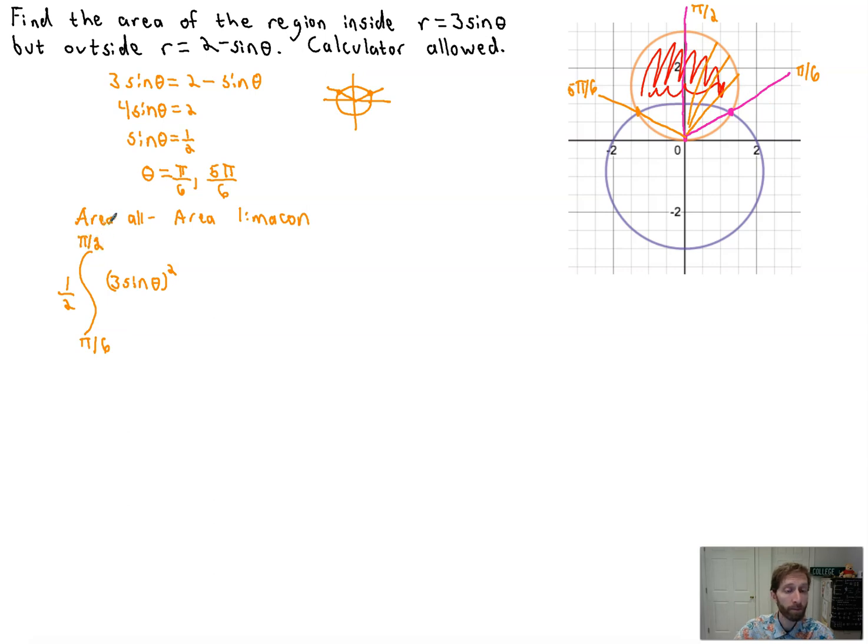And we're going to subtract from that. You could probably put it, not probably, you could put it all as one integral, but I'm going to do it as two. Pi over 6 is a pi over 2, one half there,